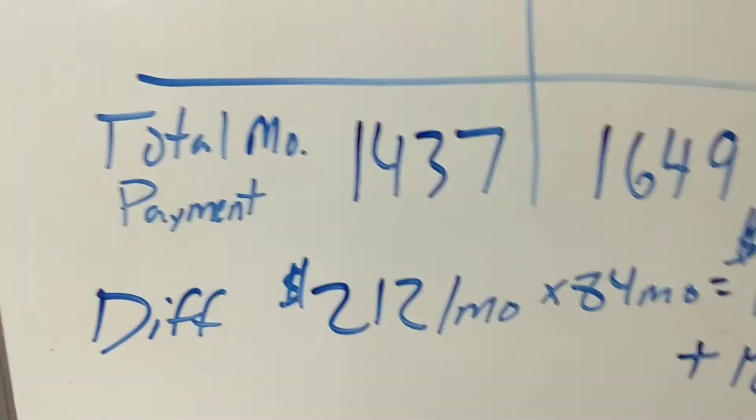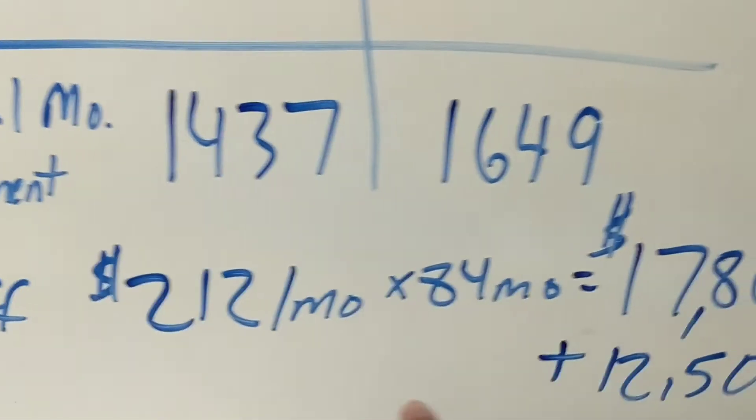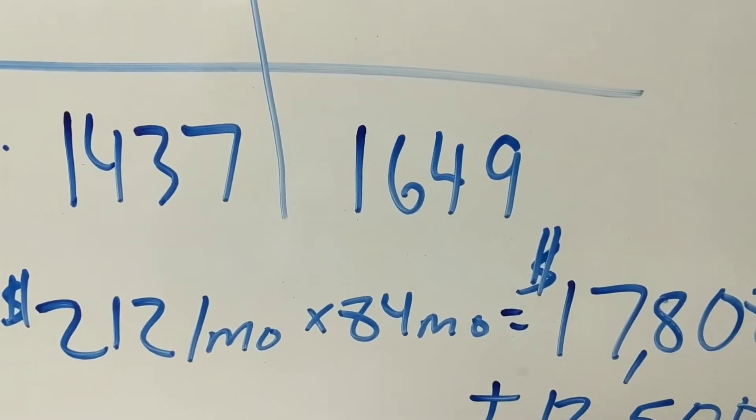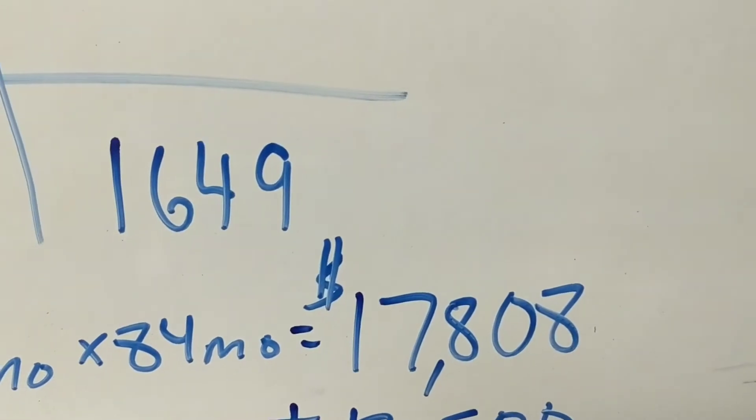So that's a difference of $212 a month: $1,649 minus $1,437. Most people live in a home for seven years, so that's 84 months. 84 times 212 gives me $17,808.